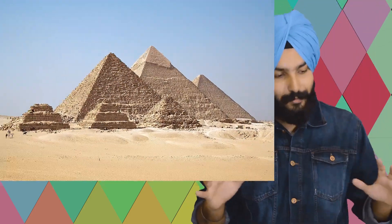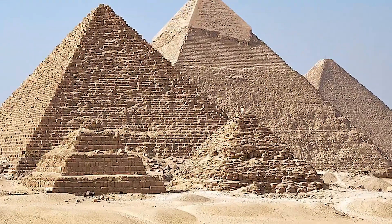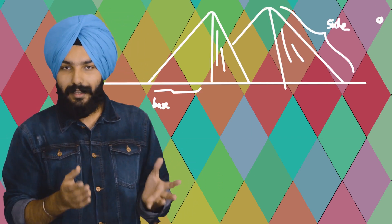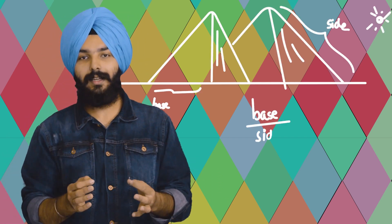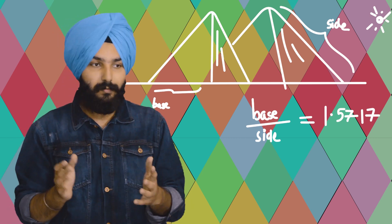This number has been found in many ancient creations. The great pyramids of Giza — Egyptians again. The ratio of the side of the pyramid to its base comes out very close to the golden ratio, and for the pyramids it is approximately 1.5717.